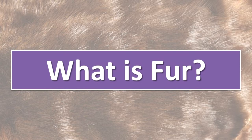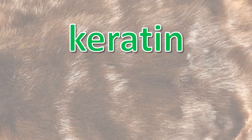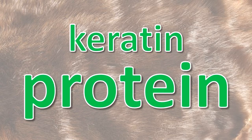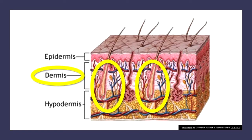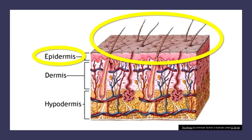What is fur? Fur or hair is a structure made of keratin, a type of protein. It grows from hair follicles in the dermis of the skin and projects from the epidermis of the skin.